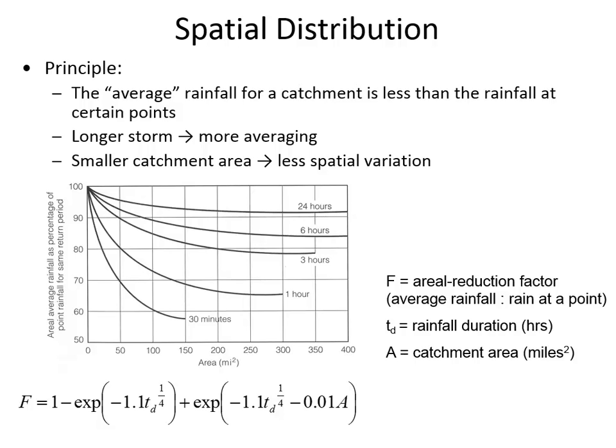This figure shows the percent difference between a single point measurement and the aerial average precipitation, as a function of storm duration. A long storm, such as one lasting 24 hours, leads to more averaging — the point measurement relative to the area measurement is more accurate. This is because a long-duration storm has relatively low intensity, so precipitation is distributed more evenly across the watershed.